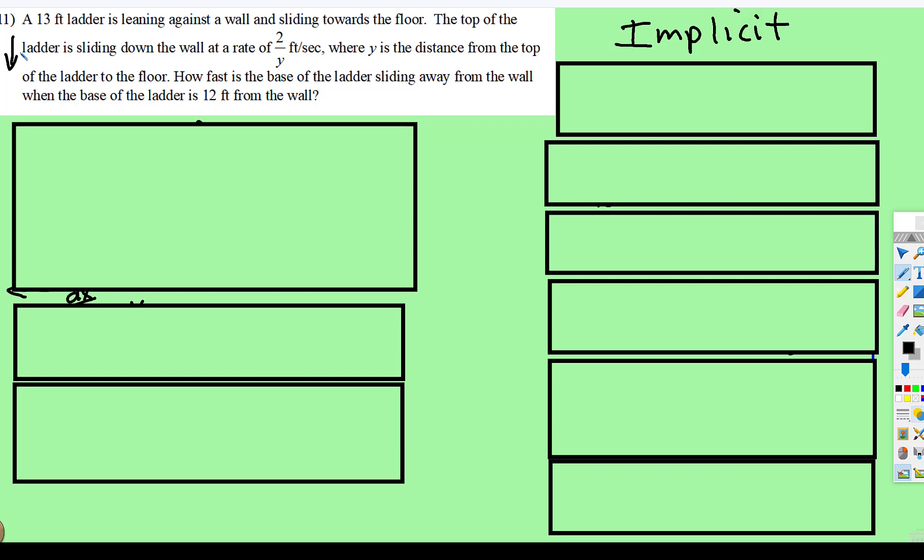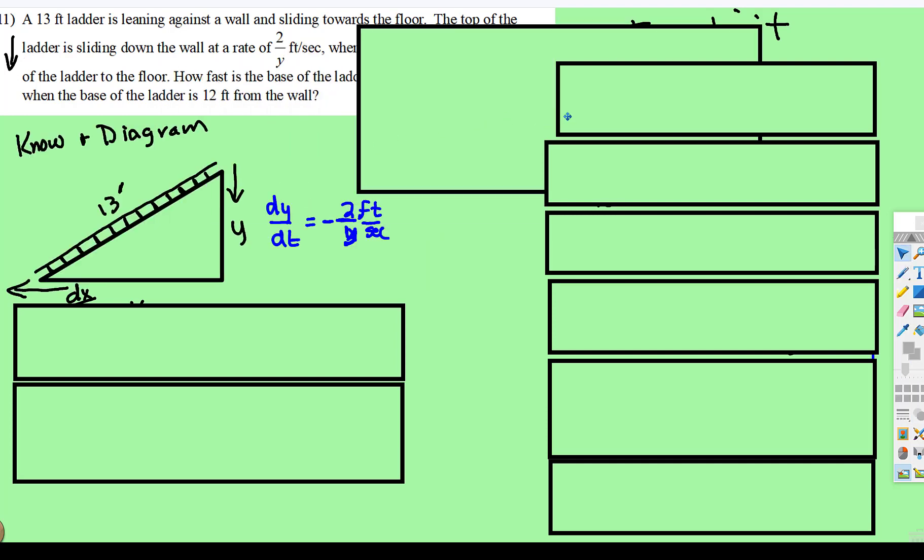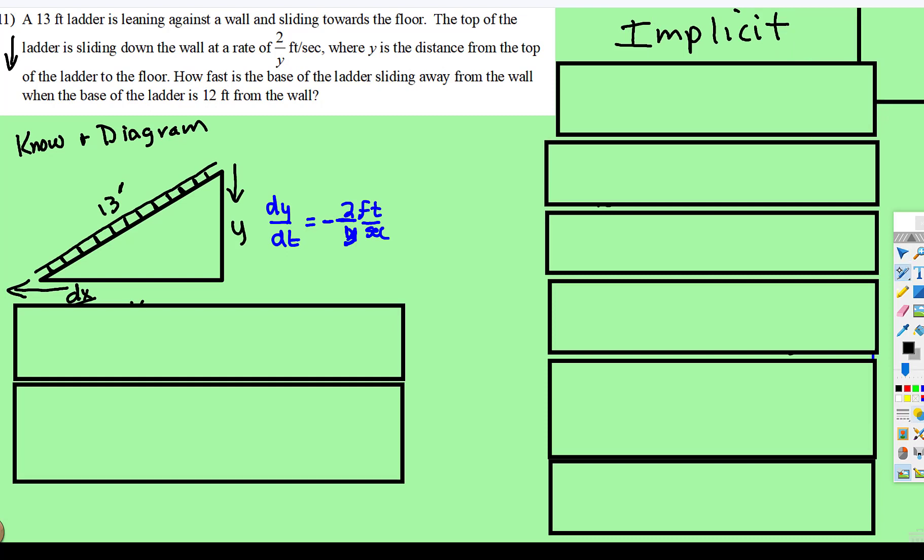How fast is the base... so let's add the diagram of what we're talking about. So here you have the ladder, and it's slipping. Well, as it's slipping down, the base of the ladder will be slipping away farther from that wall. How fast is the base of the ladder sliding away from the wall when the base of the ladder is 12 feet from the wall?